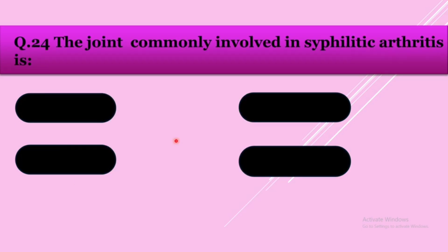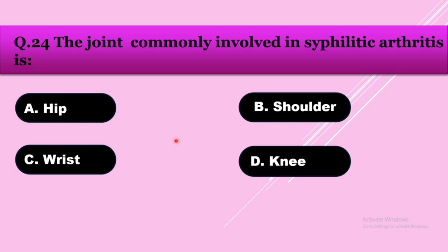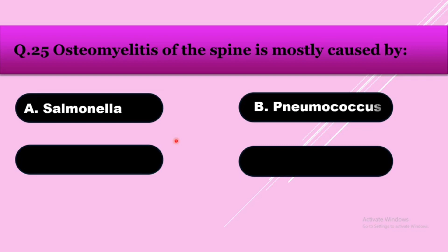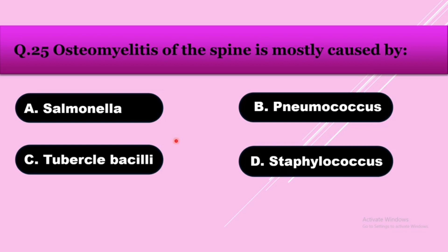Question number twenty-four: The joint commonly involved in syphilitic arthritis — option A: hip, option B: shoulder, option C: wrist, option D: knee. The answer is knee. Question number twenty-five: Osteomyelitis of spine is most commonly caused by — option A: salmonella, option B: pneumococcus, option C: tubercular bacilli, option D: staphylococcus. The answer is tubercular bacilli — TB spine.